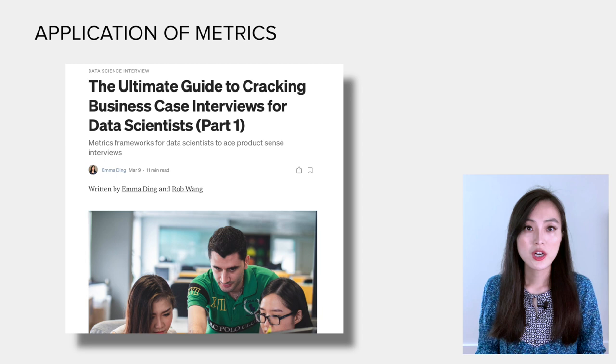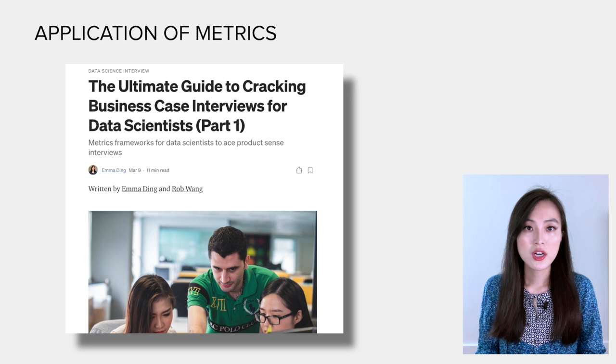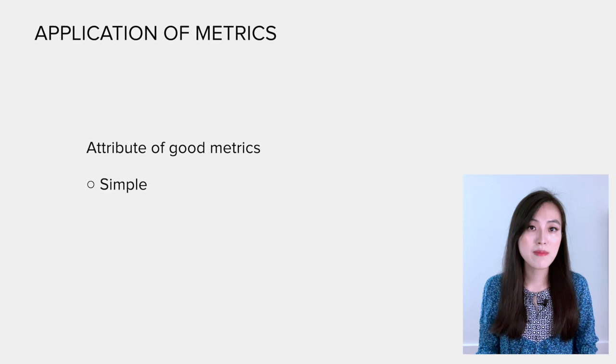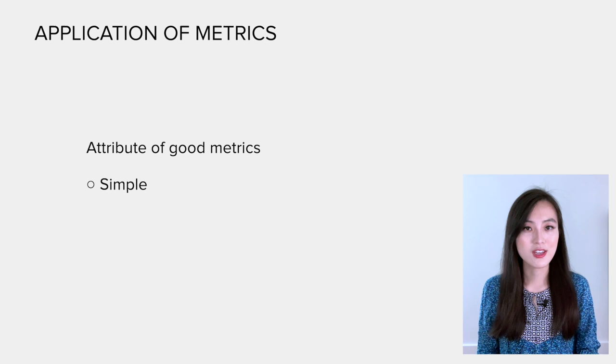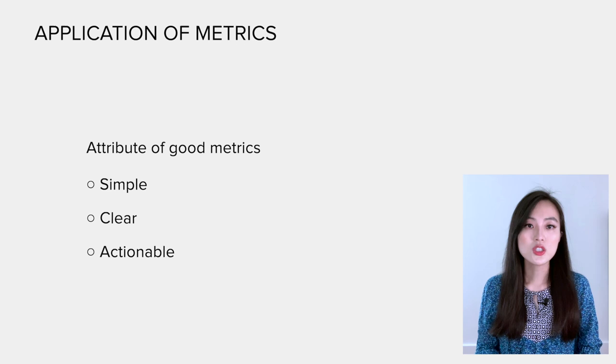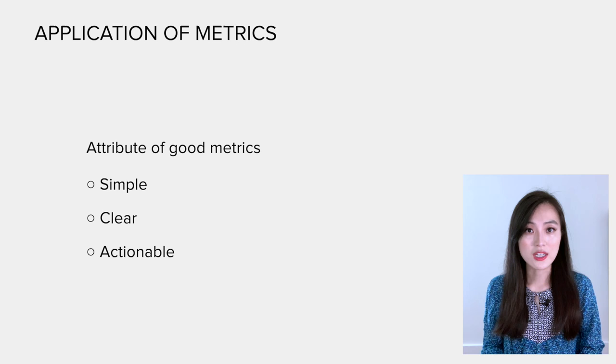Next, let's look at what are the attributes of a good metric. In the blog post I mentioned earlier, it has a few general rules to formulate metrics. A good metric should be simple. It's easy to understand and calculate, and people should be able to remember and discuss it easily. If you cannot use one sentence to explain a metric, it's not simple. Secondly, the definition of a good metric is clear and there is no ambiguity in interpretation. Thirdly, a good metric should be actionable. The metric can be shifted by changes in products and it offers insights on how you can improve.